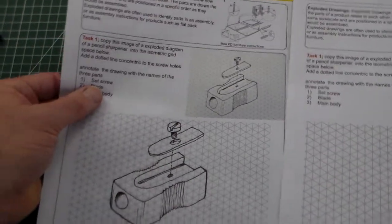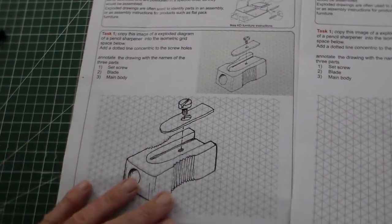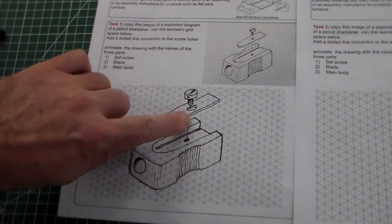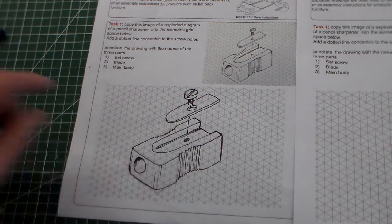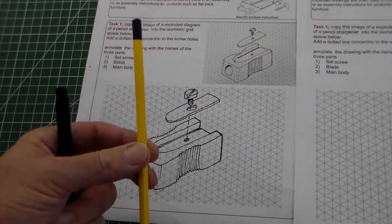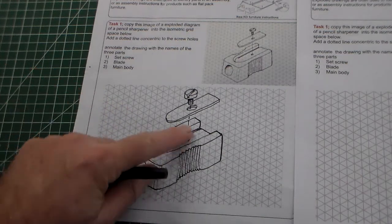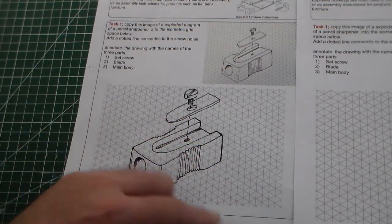There's a completed pencil sharpener and you can see there that I've got my line through here. I drew these firstly in pencil and then I used a fine liner to go over it and lastly a rubber to clean up the drawing.